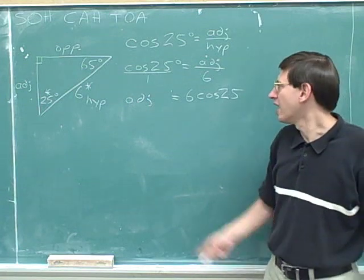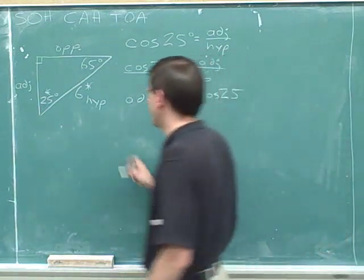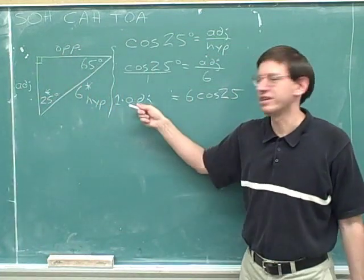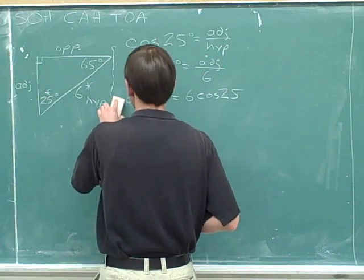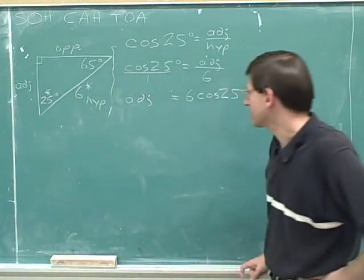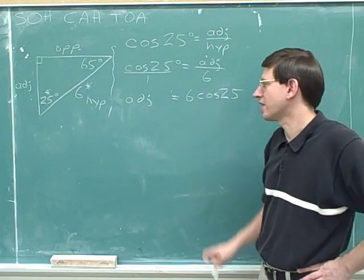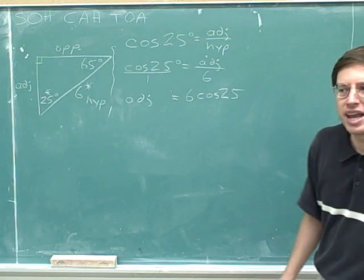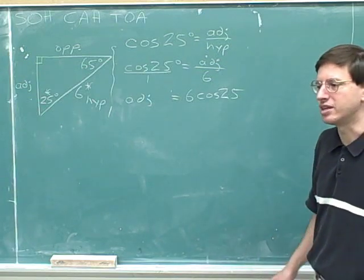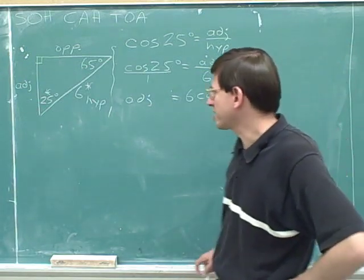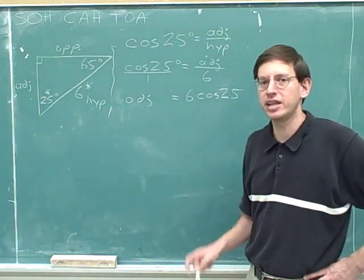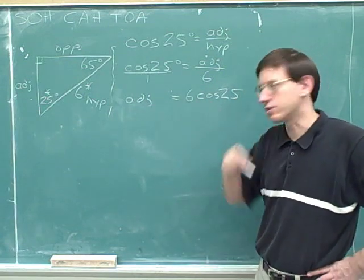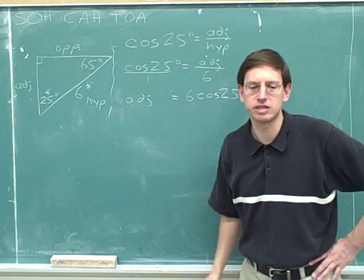I'm going to skip the step of writing '1 times the adjacent side' — it's pretty obvious that 1 times the adjacent side is just the length of the adjacent side. So to find the adjacent side, we multiply the hypotenuse times the cosine. You might have already started to notice the pattern: in all of these problems where I tell you the hypotenuse, you always find the adjacent side by multiplying the hypotenuse times the cosine. That's what happens when we set up the cosine term and then cross-multiply.